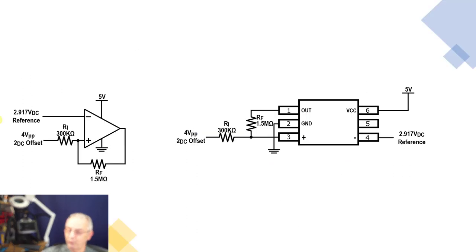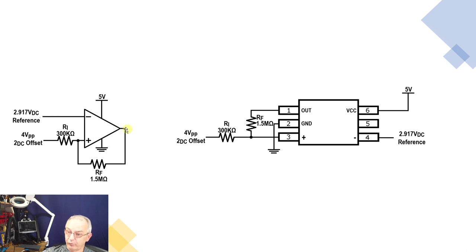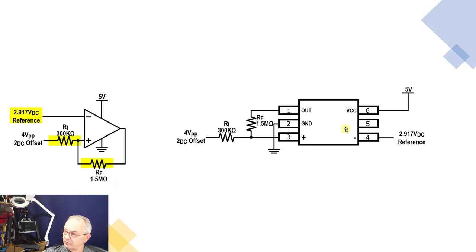The circuit we're working with is shown here, and I've already done the calculations which I'll go over in the next slide. We're going to use the TLV3201 from Texas Instruments. We'll set up a 2.917V DC reference, a 4V peak-to-peak input with a 2V DC offset — we don't want negative voltages into these devices. The feedback resistor is 1.5MΩ and the input resistor is 300kΩ. I'll also put a 4.7kΩ or 5.1kΩ load resistor on the output.